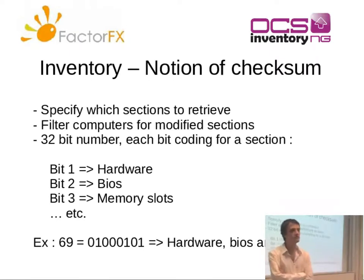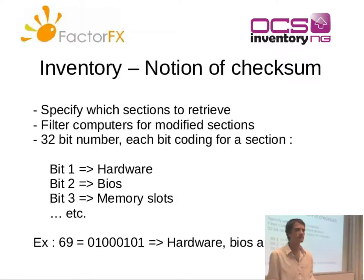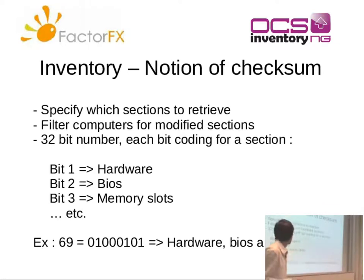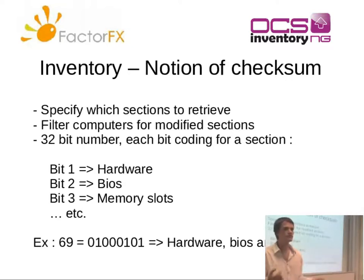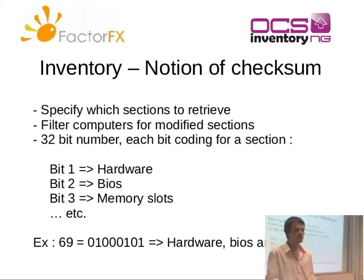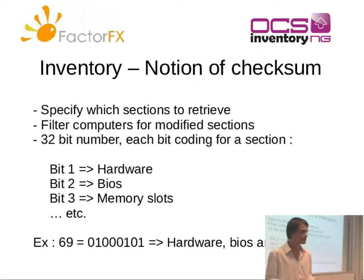To do that, you have a notion of checksum in OCS Inventory. This checksum helps you keep track of what has been updated since the agents last contacted your server. It helps you select what kind of data you want to get from the web services. It's a 32-bit number where each bit codes for a section of your inventory. For example, if you want to get your monitors, you specify a specific bit — 64 in this case. So you put in a number and get only the information you want, and only information that has been updated since the last time you queried.